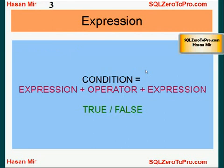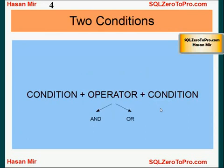In the previous tutorials you saw that a WHERE clause consists of one or more conditions. A condition itself is a group of expressions separated by comparison operators. The whole condition at the end results in either true or false. You can have multiple conditions in a WHERE clause, and if you are putting two conditions there has to be a logical operator between the two conditions.